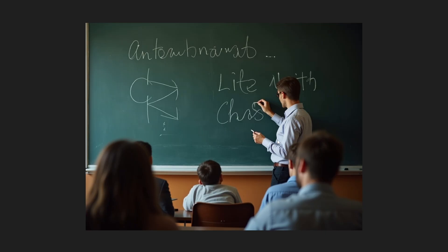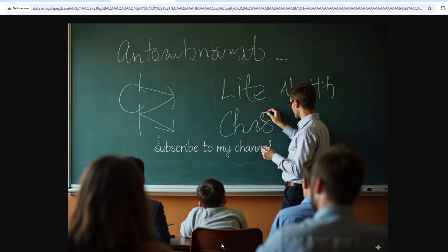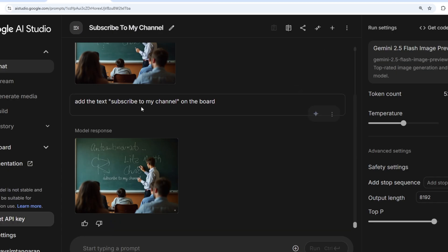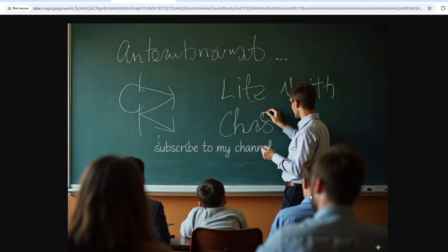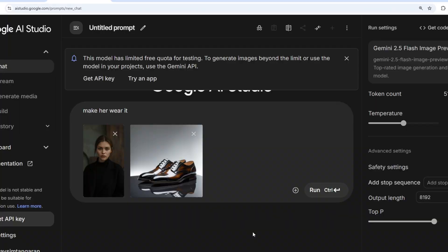Next, let's test how it integrates text onto an image. I have a blackboard with some random text and I prompt: 'Add the text subscribe to my channel on the board.' It retained the existing text rather than replacing it — but that's because I said 'add', not 'replace'. What's impressive is it perfectly matched the chalk style for the new text. The only minor issue is that the chalk effect overlaps slightly on a hand, but apart from that it has done a splendid job blending the text onto the board.